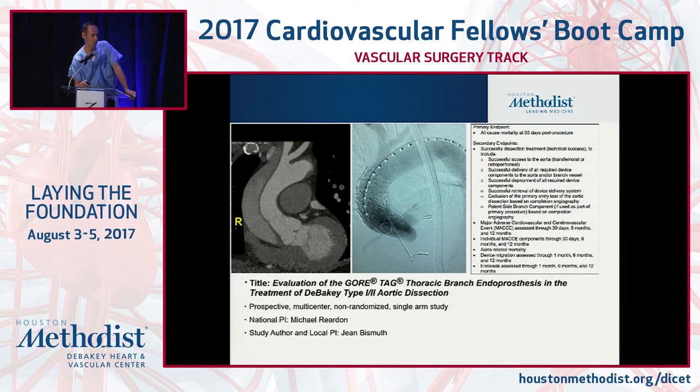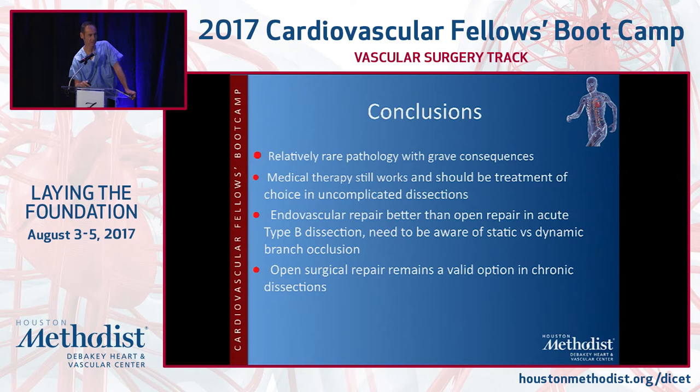In conclusion, this is a relatively rare pathology with potentially grave consequences. Medical therapy still works and should be the treatment of choice in uncomplicated dissections — don't feel you need to treat everybody with stent graft, as that's also not without complications. Endovascular repair is definitely probably the mainstay now for type B dissections, and may become so for type A dissections down the road. Open surgical repair remains a valid option in chronic dissections and should definitely be considered as such.